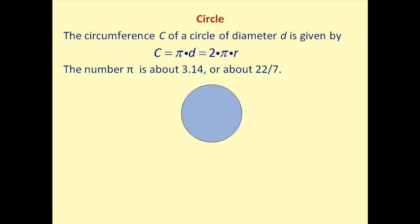Now let's talk about a circle. The perimeter of a circle is called the circumference, and it equals pi times the diameter, or 2 times pi times the radius. The diameter goes from one side of the circle to the other passing through the center, while the radius is a segment from the center to the edge of the circle. If you multiply the radius by 2, it equals the diameter, or the radius is half the diameter.